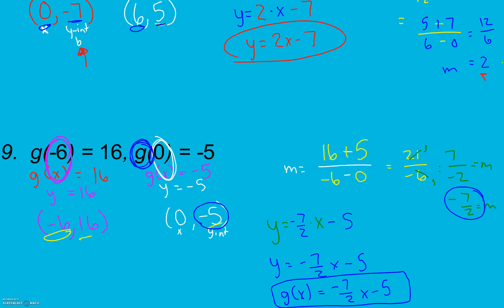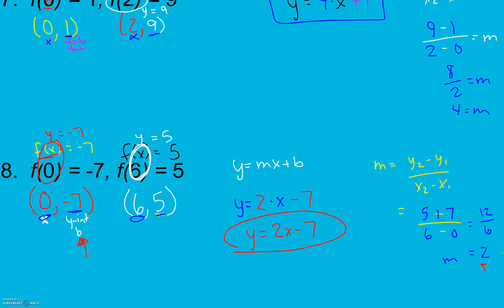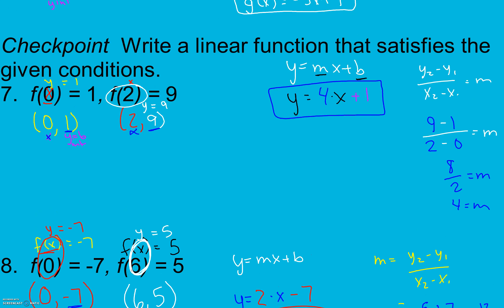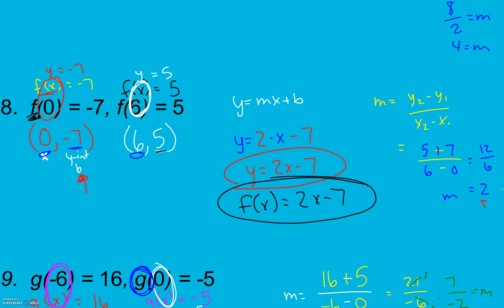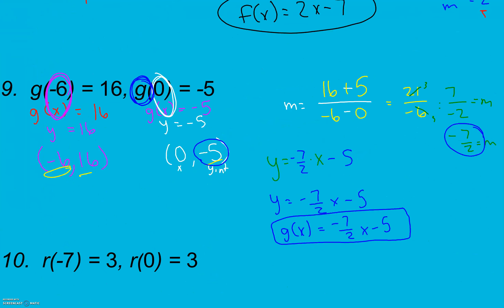I've been writing these all as y equals, so let me go back and put them in function notation. For number 7, this was f of x, so it's f of x equals 4x plus 1. For number 8, these are f's, so it's f of x equals 2x minus 7. Don't forget to put them back in function form, because that's what we're trying to do here.